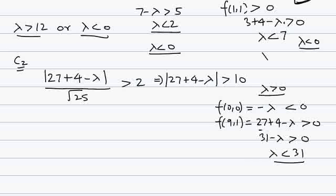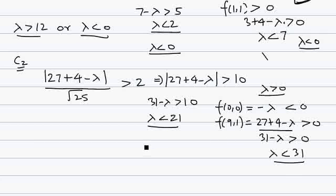Since this expression is positive, we can remove the mod sign: 31 minus lambda greater than 10, giving lambda less than 21. Combining both — lambda less than 21 and lambda less than 31 — the combined solution is lambda less than 21. This is the case when lambda is greater than zero.